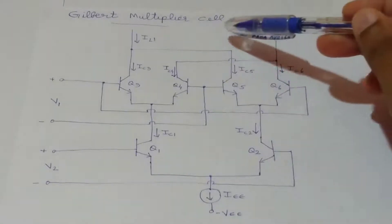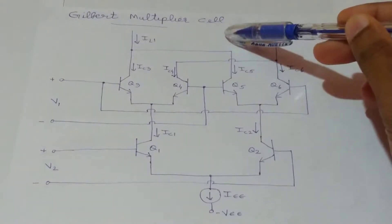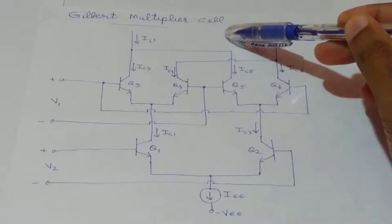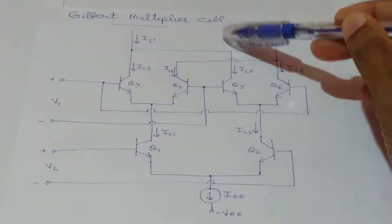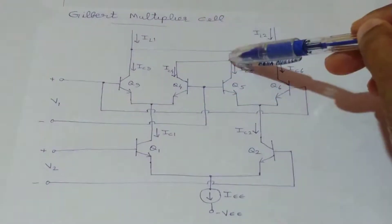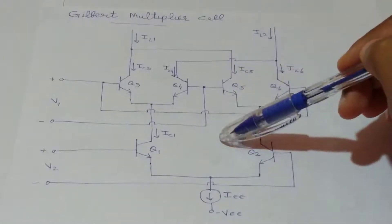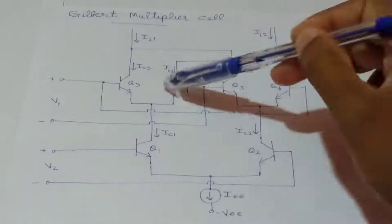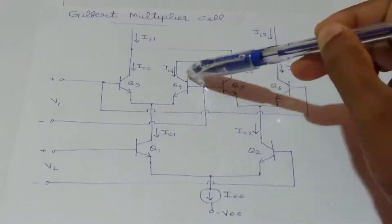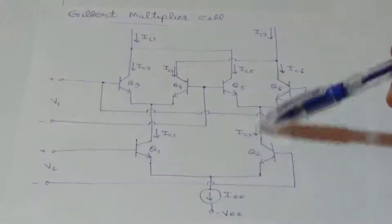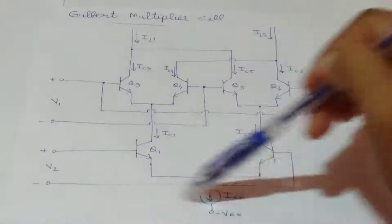Today we are going to discuss the Gilbert Multiplier Cell. The Gilbert Multiplier Cell is a modification of the emitter coupled cell and allows four-quadrant multiplication. Two cross-coupled emitter coupled pairs in series connection with an emitter coupled pair form the structure of the Gilbert Multiplier Cell, as shown in this diagram.